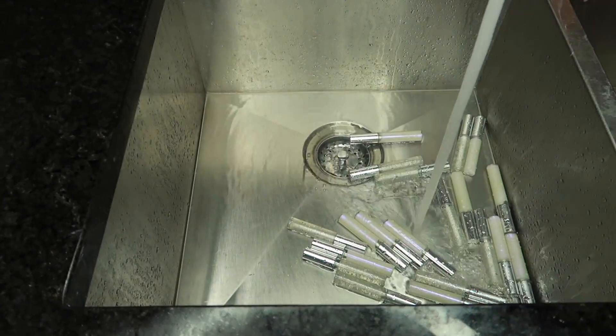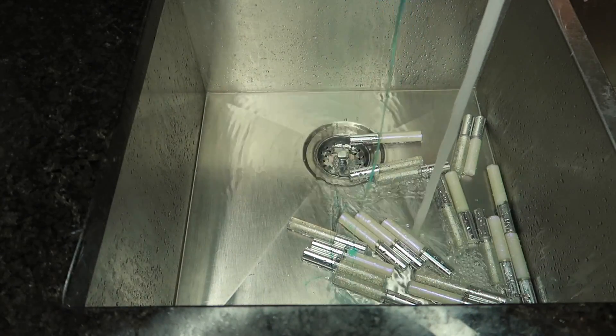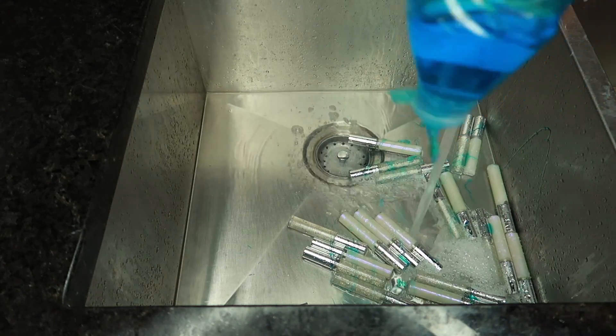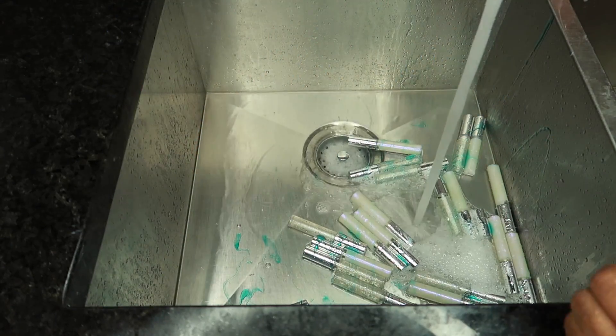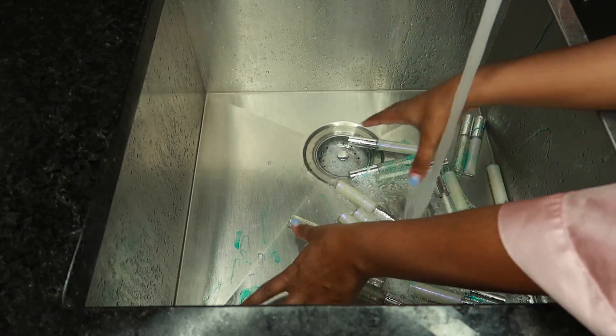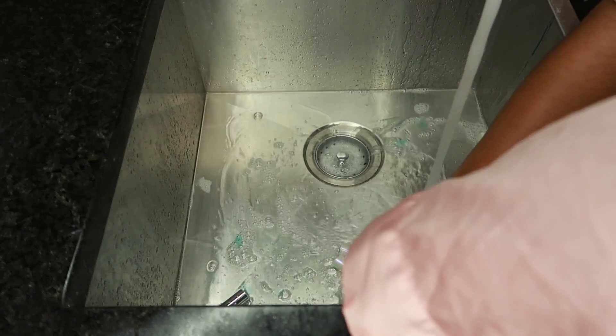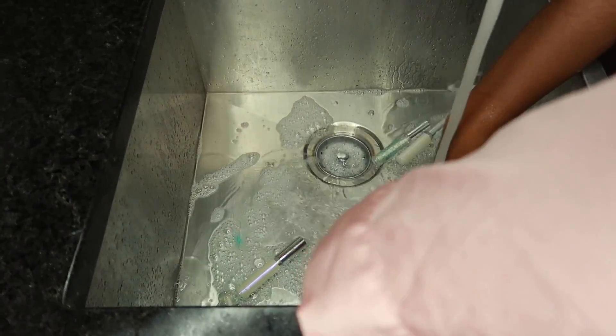Now I'm going to take some Dawn Antibacterial Soap and squirt that all over the lip glosses. This is just going to make sure there are no germs on it and it's going to be the first initial cleaning of the glosses. I just rub that around and make sure they're clean.